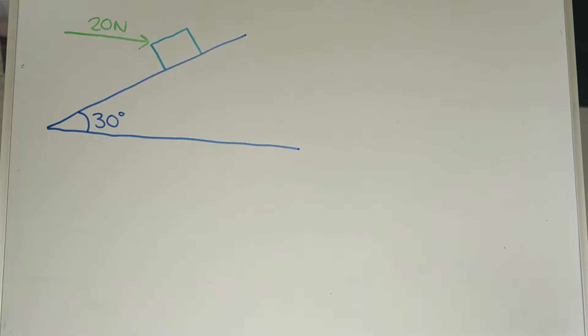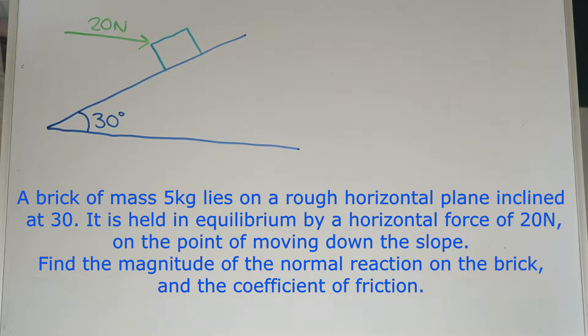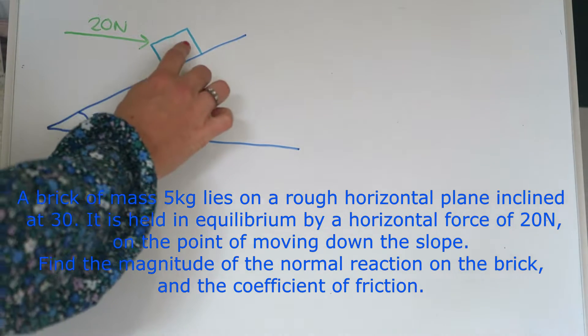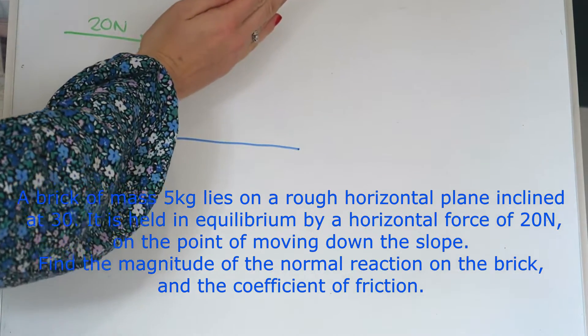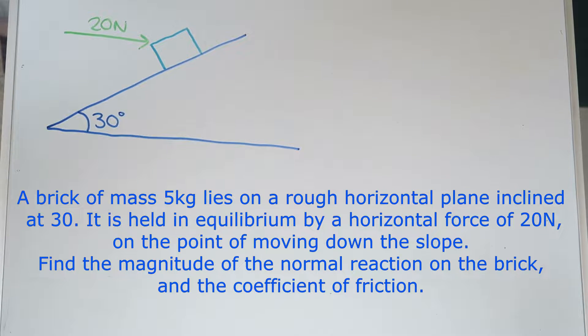Okay, so here we've got a question, and I will put the text of the question on the screen there for you, so take a screenshot or make a note of the question. It's going to disappear shortly, and we've got a slope here, and we've got a brick on the slope being held in equilibrium by a horizontal force of 20 newtons, and it's a rough plane. The brick is on the point of moving down the slope. The reason they tell you that is that gives you an idea of which way to apply the friction.